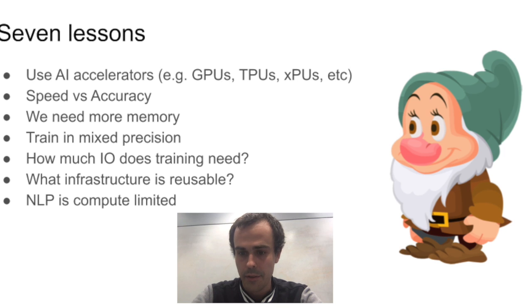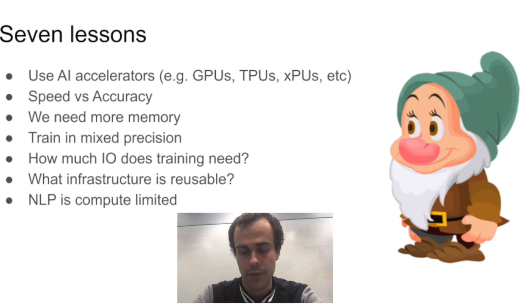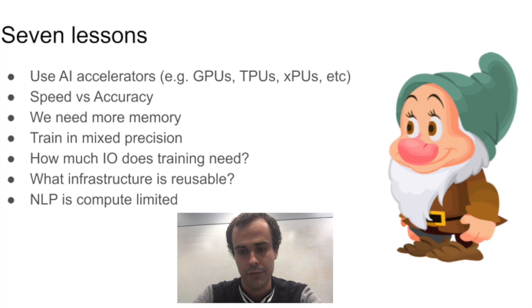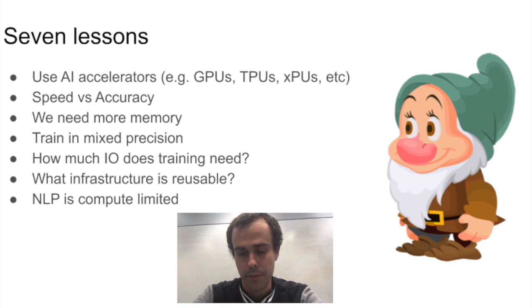A fourth lesson that we learned is that we should train in mixed precision. We don't need really high precision like we do in scientific computing. We don't need 64-bit or 128-bit or arbitrary precision floating point to train deep neural networks. Use 16-bit or less.